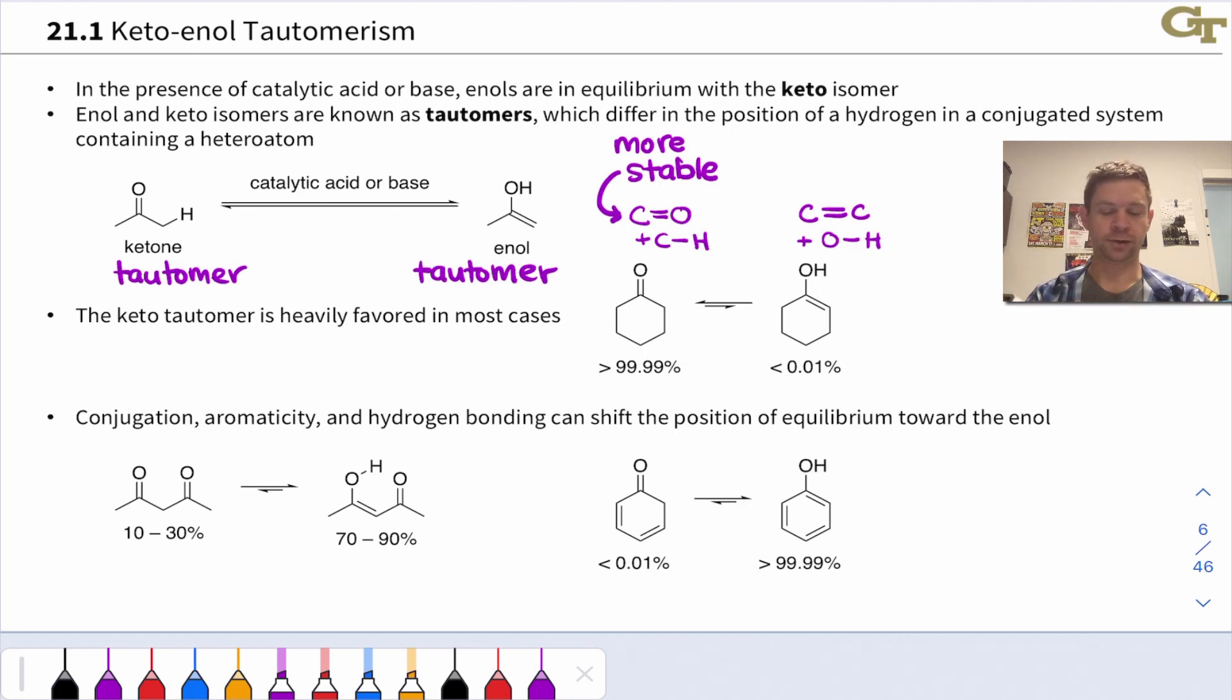Two examples are shown here. This is acetyl acetone, acetone with an acetyl group linked to one of the methyl carbons. We look at the resulting enol after tautomerization. We've got a conjugated system here with the new C=C double bond in conjugation with the other carbonyl group. There's also a hydrogen bond here internally between the carbonyl oxygen and the OH proton.